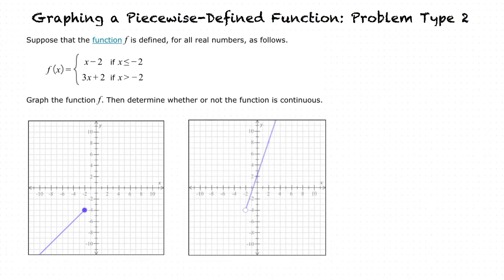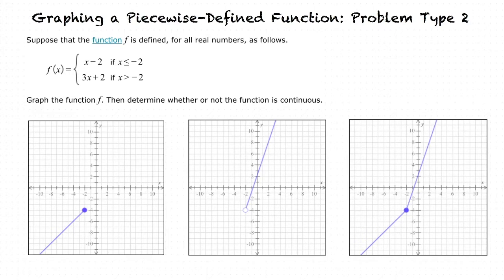After we're done finding the graphs of both piecewise functions, we can combine the two graphs and we will have our final piecewise defined function graph. Notice that there are no gaps or jumps in the graph. In other words, we can trace the function's graph without interruption. This makes the function continuous.